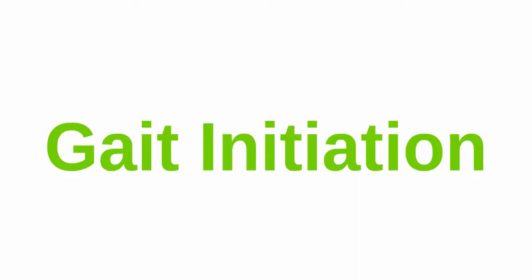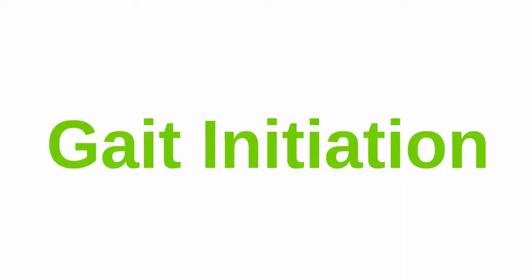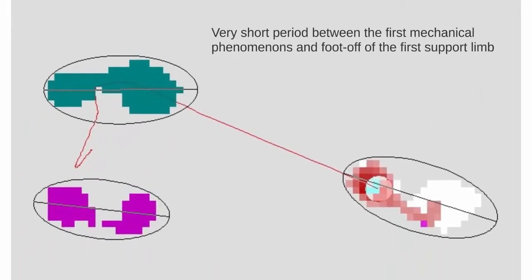The term gait initiation defines the transition from the standing posture to walking in which a precise control of the center of pressure is required to accelerate the center of mass in the direction of advance. Specifically, it is the very short period between the first mechanical phenomena and the time when the support limb begins its swing phase.